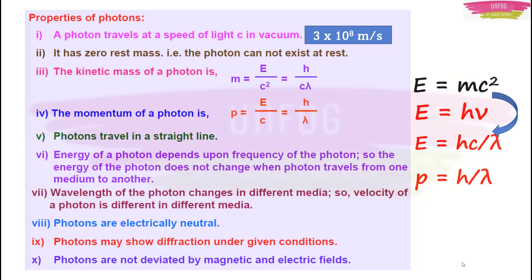The seventh property: the wavelength of a photon changes in different media, so the velocity of a photon is different in different media. Frequency is inversely proportional to wavelength, and wavelength is related to the speed of the photon: v = fλ. If the medium changes, the wavelength changes, and therefore the velocity changes. So, when a photon travels through different media, its energy does not change, but its velocity does change.